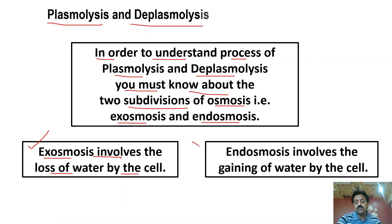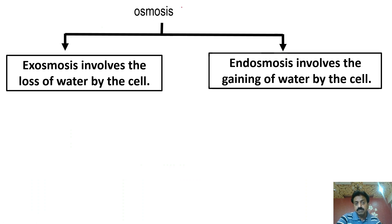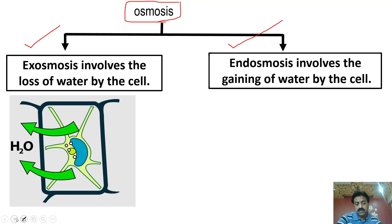Aur ab aate hain Endosmosis ki taraf. Endosmosis involves gaining of water by the cell. Agar koi cell paani gain kar raha hai, toh is Osmosis ki subdivision ko hum Endosmosis kahenge. Toh jaise humne padha, Osmosis ke do subdivisions hote hain: jab koi bhi cell paani lose karta hai toh Exosmosis, aur jab koi bhi cell paani gain karta hai toh Endosmosis.